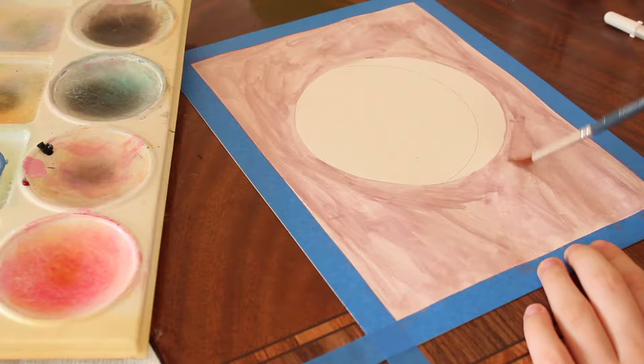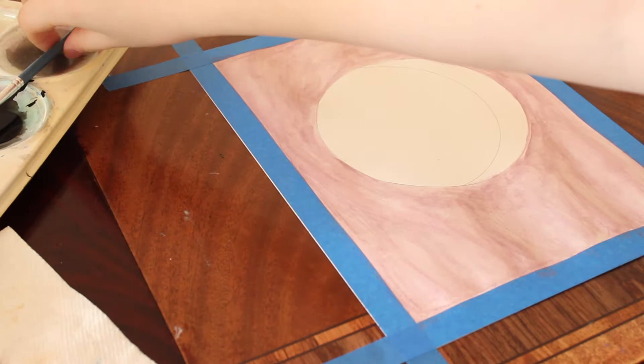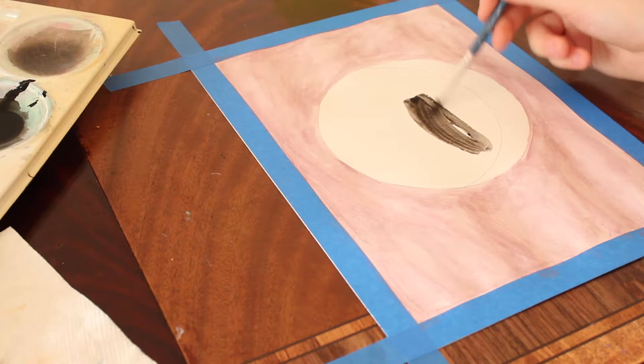Then it looked too streaky to me, so I'm just taking water on my brush and dispersing the pigment so that it's more solid and less streaky. You do want patterns of darkness and lightness but not brush streaks.